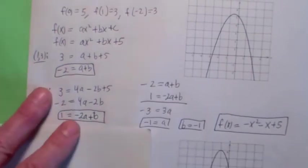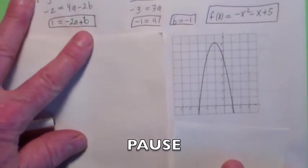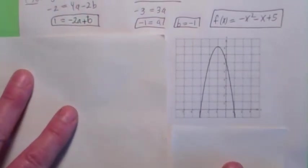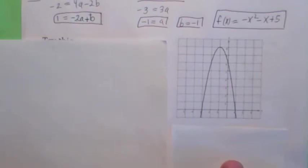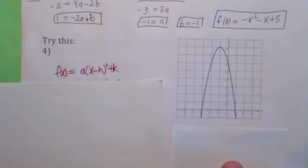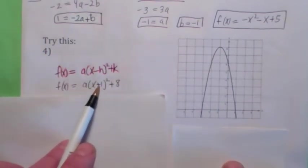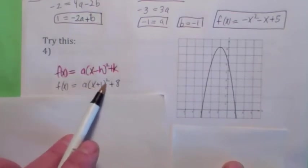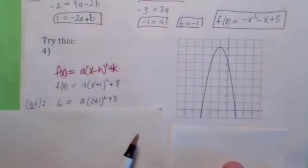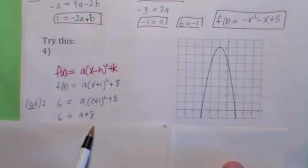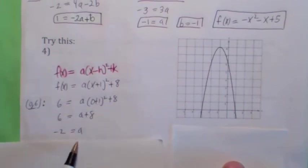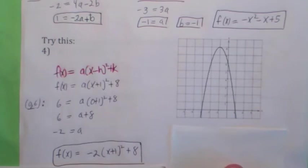Here's one to try: see if you can find the formula for the function shown on the graph. On this one you could have used either the vertex form or the factored form — if you did it different ways, the function might look different but will be the same when multiplied out. Using the vertex form: the vertex is at (−1, 8). Plugging in h = −1 gives f(x) = a(x + 1)² + 8. To find a, use the y-intercept: when x = 0, y = 6. That gives 6 = a(1) + 8, so a = −2. The answer is f(x) = −2(x + 1)² + 8.